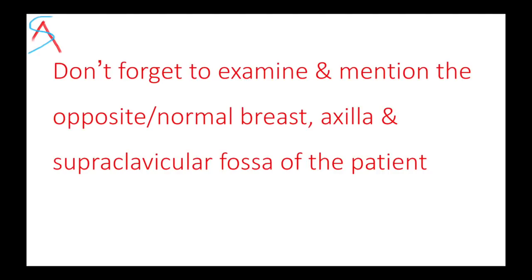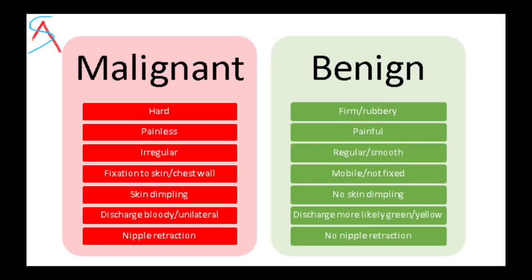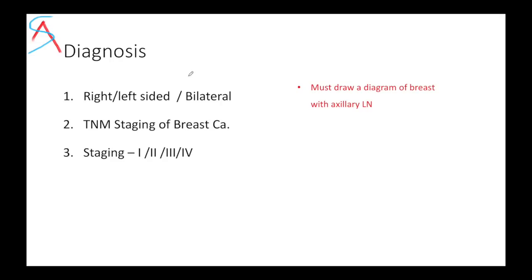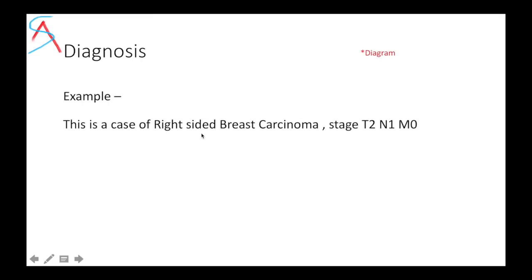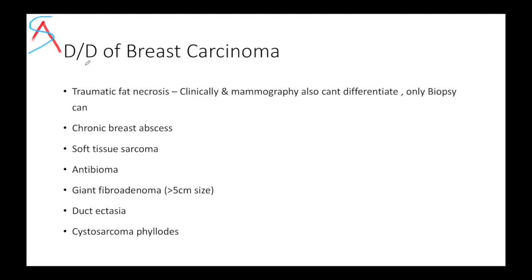Do not forget to examine and mention the opposite normal breast, axilla, and supraclavicular fossa. You must know the difference between a malignant breast mass and a benign breast mass. In your diagnosis, tell which side is affected or if bilateral, write the TNM staging and final staging, and drawing a diagram of the breast with the axilla is very important. A diagnosis would be: 'This is a case of right-sided breast carcinoma staging T2N1M0, Stage 2.' The most common differential is traumatic fat necrosis — clinically and on mammography you cannot differentiate it from breast carcinoma; only biopsy can differentiate.